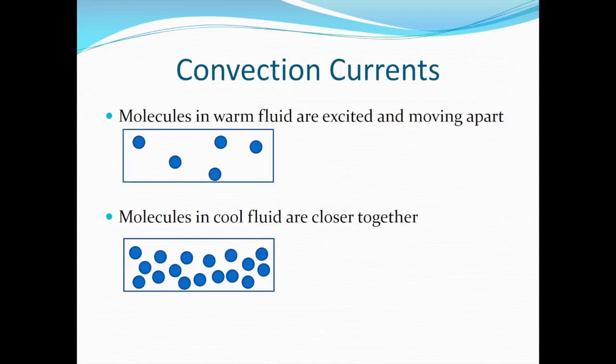Convection currents occur when a warm fluid and cool fluid interact. The molecules in the warm fluid are excited and moving apart, while the molecules in the cool fluid are closer together. It's easy to remember which is which if you think about yourself when you're warm or cool. If you're hot, you don't want a lot of other people around you, so you spread out. But when you're cold, you huddle close together. It's the same idea with the molecules in a warm and cool fluid.